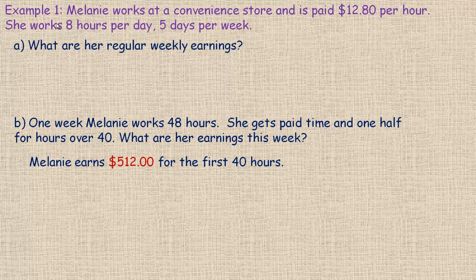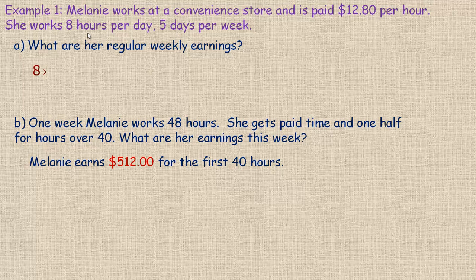Example one: Melanie works at a convenience store and is paid $12.80 per hour. She works eight hours per day, five days per week. In part (a), we're asked what her regular weekly earnings are. We take the number of hours she works in a day and multiply by the number of days to find her weekly hours.